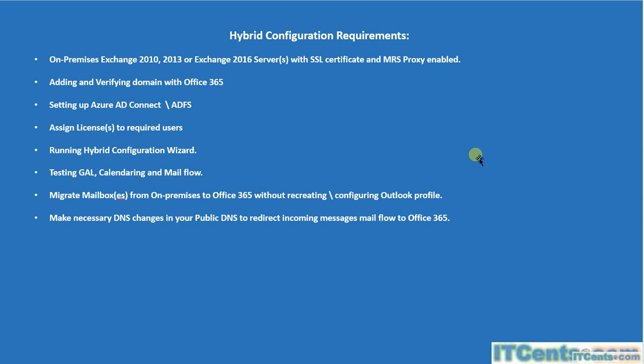These are the hybrid configuration requirements: you need to have an on-premises Exchange Server 2010, 2013, or 2016 with a third-party SSL certificate and MRS Proxy enabled. If you have Exchange 2007 or earlier, you cannot do hybrid configuration — you need to go for a staged migration instead. I will show you how to enable MRS Proxy in the demonstration. To save time, I have already installed the SSL certificate on my Exchange 2016 server.